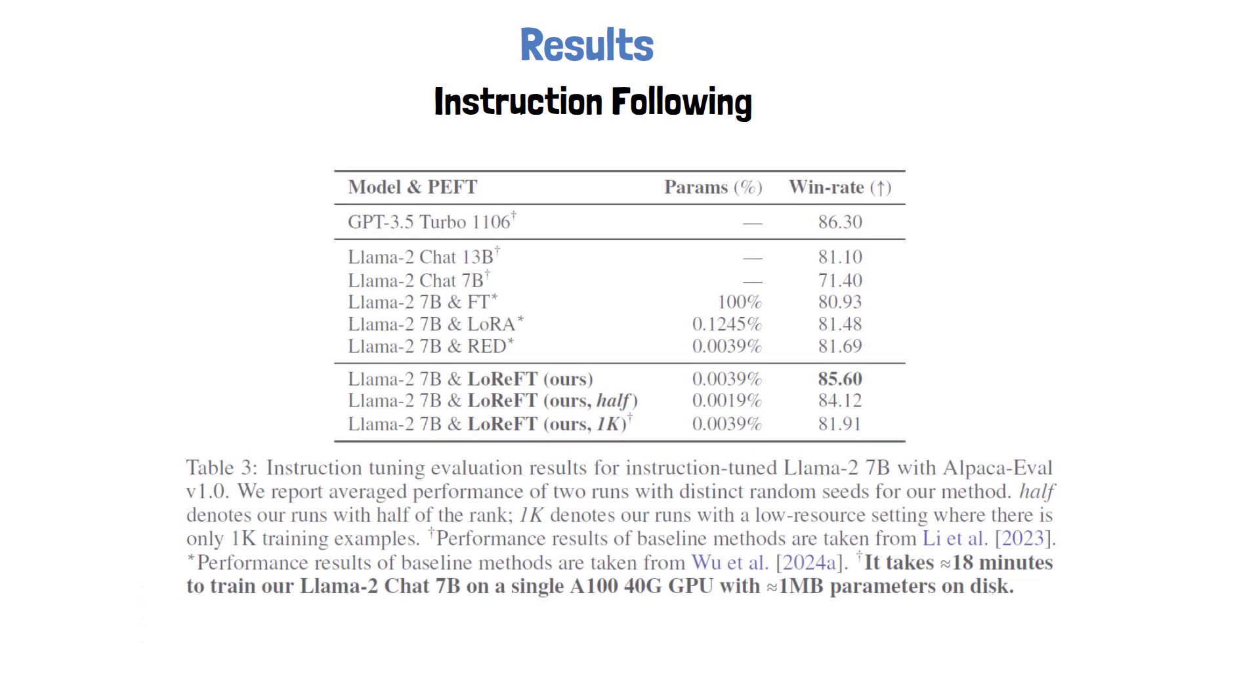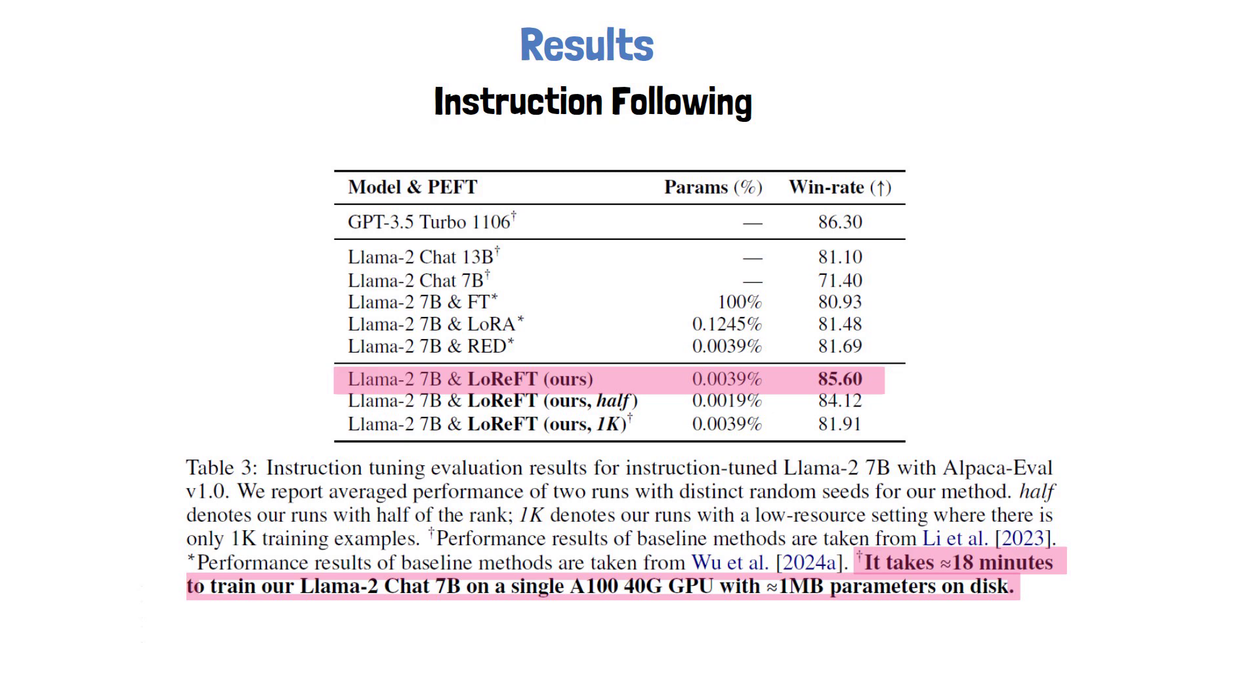Another set of results for instruction following can be seen in the following table from the paper, where GPT-4 is used as a judge to decide between the listed model in the table to text-davinci-003. Impressively, one of the LoReFT versions achieves the best win rate from the evaluated open source models, and as mentioned in the table description, it only took 18 minutes to train on a single A100.